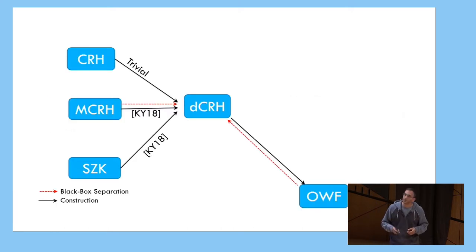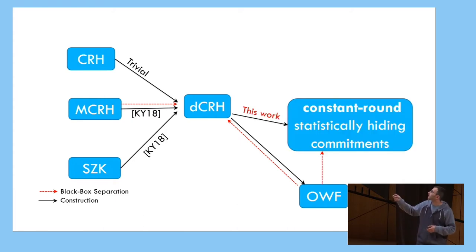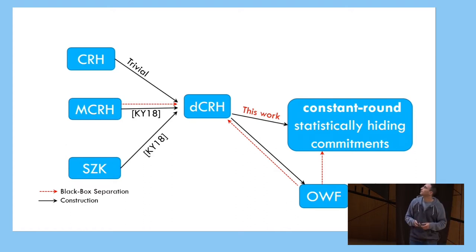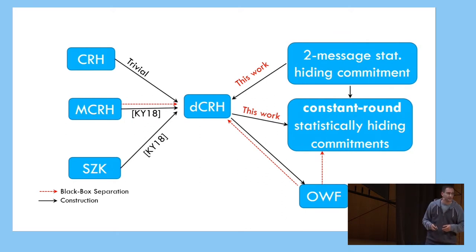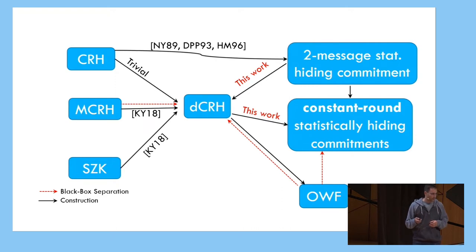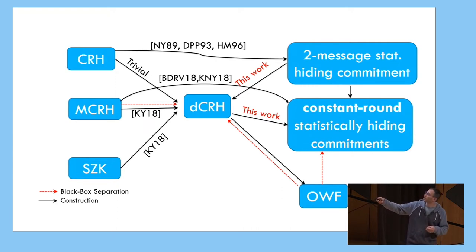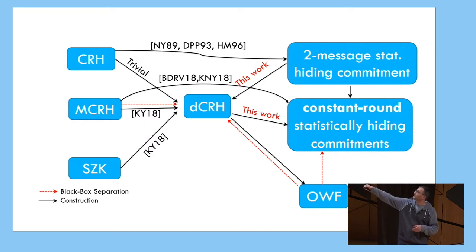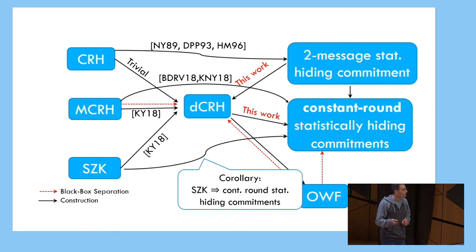To complement this result, we show that if you have a two-message statistically hiding commitment scheme, this actually implies a DCRH. So this is a very weak equivalence between these commitment schemes and DCRH. Going back to our picture: we have constant-round commitments from this work, with the black-box separation. We have two-message commitments that imply DCRH. From CRH, we already know how to build two-round statistically hiding commitments. In previous work, MCRH was shown to construct constant-round commitments. And we get a new corollary: from SZK you get DCRH, and then you get constant-round commitments — so statistical zero knowledge implies constant-round commitments.